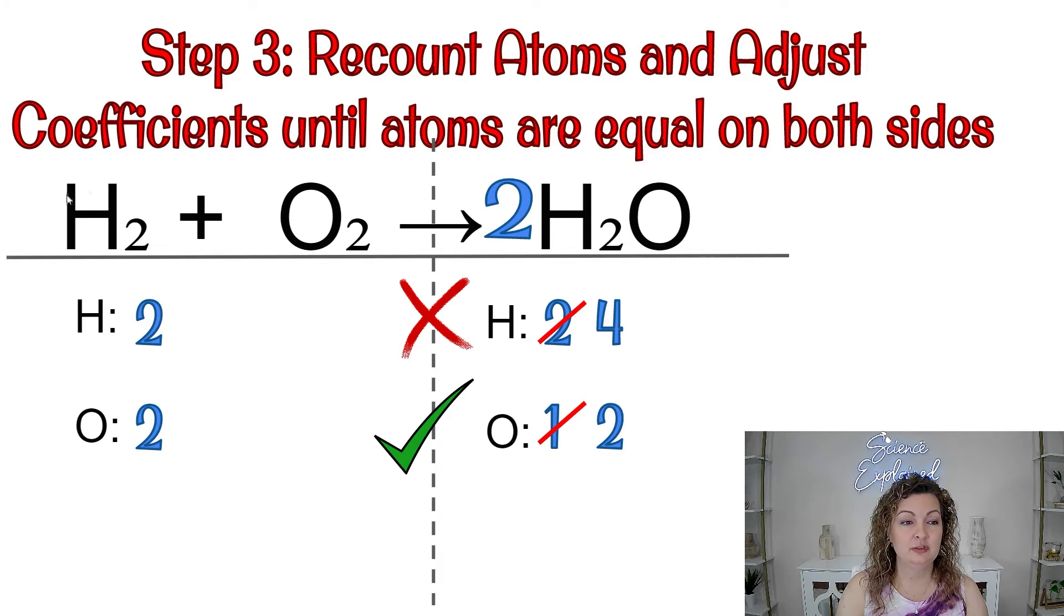Well, how can we do that? Let's look at what we have. We have a subscript of two. I need to multiply something by two to get me four, and that is, of course, going to be two, right? Because I'm going to use my distributive property and multiply the coefficients by the subscript. So two times two, and it will give me four hydrogen.